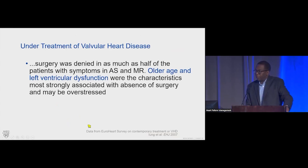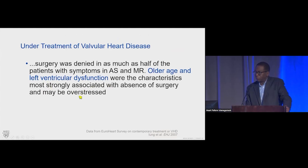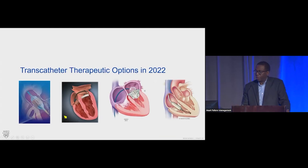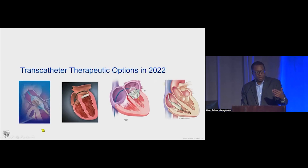This under-treatment is not a new finding. A 2007 EuroHeart survey on management of valve disease across Europe found that surgery was denied in as much as half of symptomatic patients with aortic stenosis and mitral regurgitation, and that older age and left ventricular dysfunction were most strongly associated with absence of surgery — meaning patients were inappropriately denied intervention. This is exactly where transcatheter valve replacements came in, developed so you could treat patients inappropriately denied surgery due to older age or heart failure.